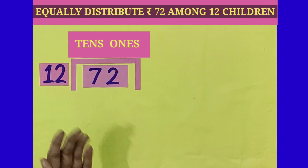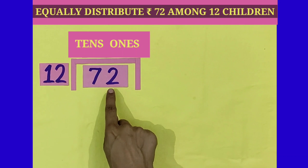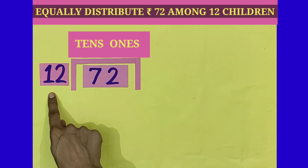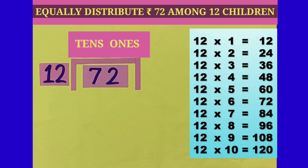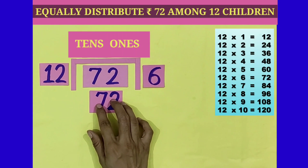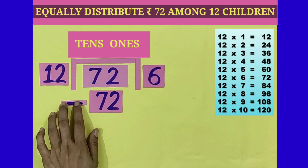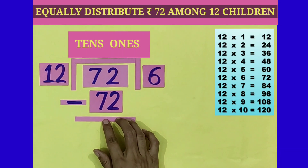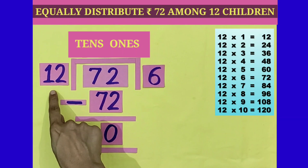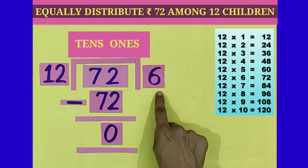Now students, we will solve the same with the formal method of division. We have the amount 72, which has 2 ones and 7 tens. We have to divide 72 by 12, and here we will refer to the table of 12. In this table, you can see 12 times 6 is equal to 72, and this is the amount we need. 12 times 6 is 72, and when we subtract 72 from the same number itself, we are left with 0. That means no amount is left, and we have equally distributed rupees 72 among 12 children. Each one of them has received 6 rupees.